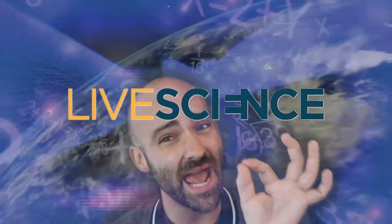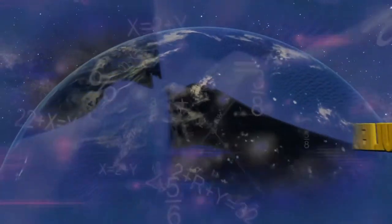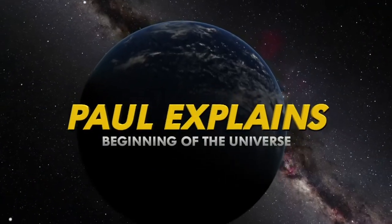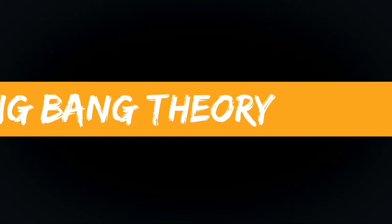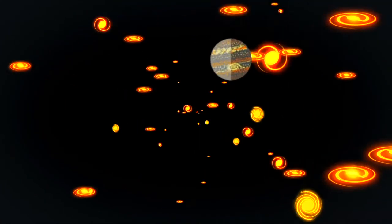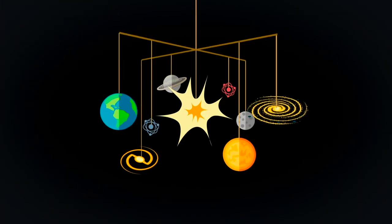I'm Paul Sutter and this is Paul Explains, the show where I explain. Let me start with the Big Bang Theory. Our Big Bang Theory is our modern model of the early universe, the history of the universe. We have a lot of evidence for this theory.